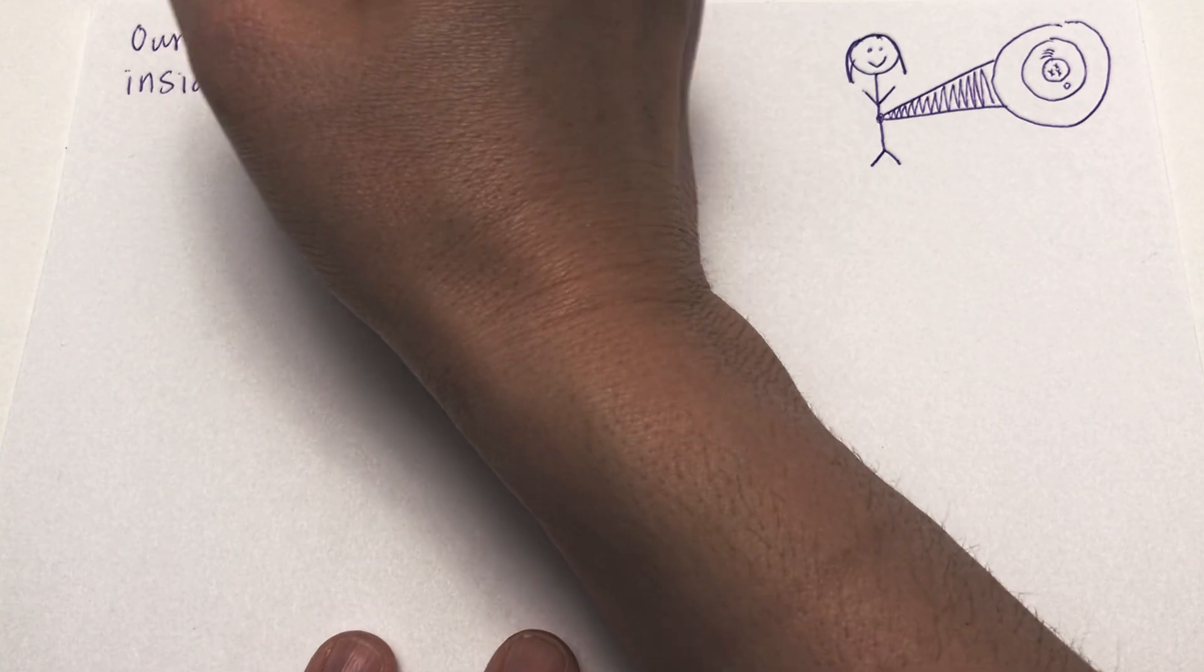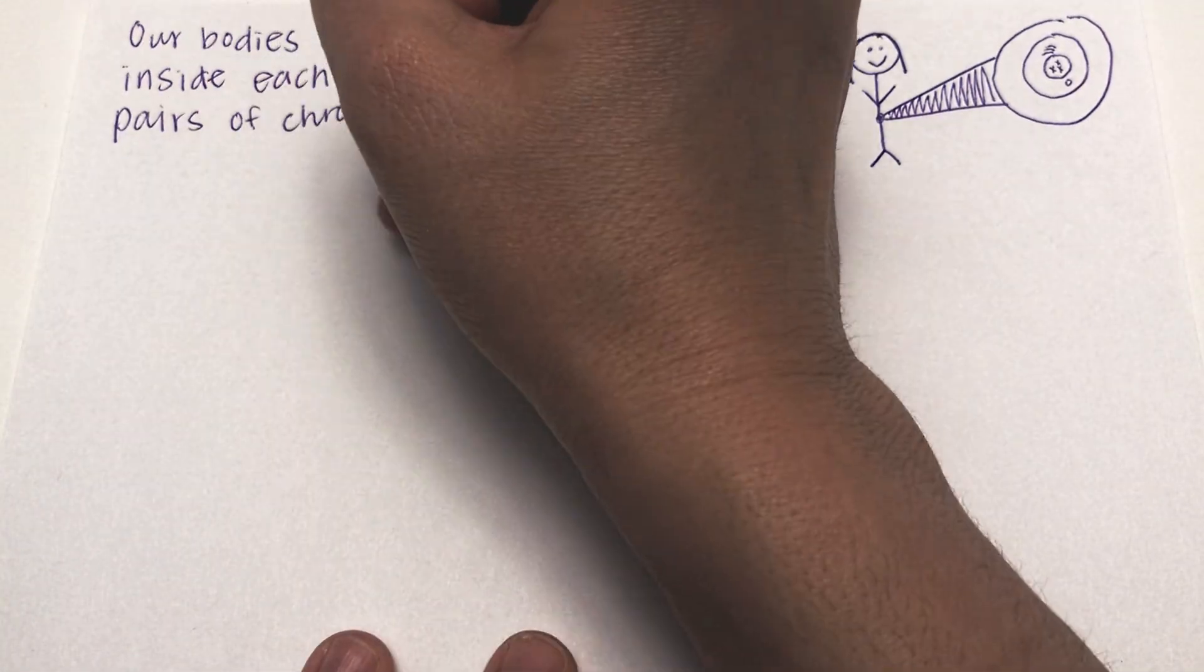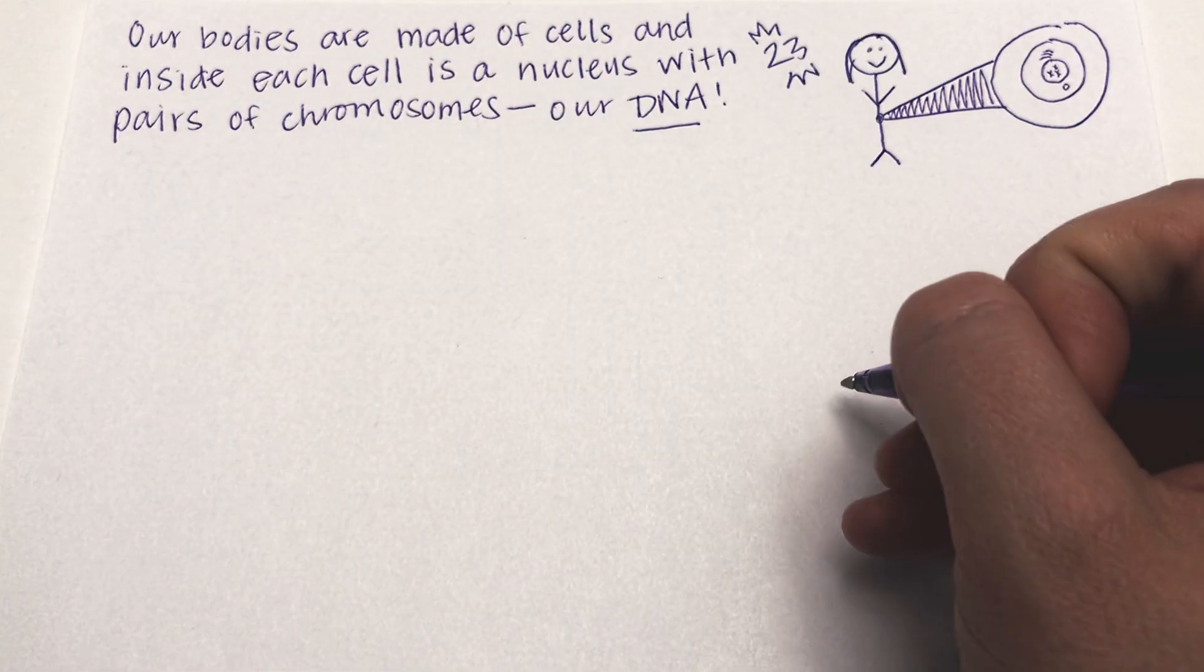Our bodies are made of cells and inside each cell is a nucleus with 23 pairs of chromosomes, our DNA.